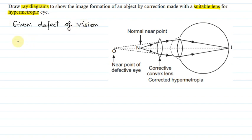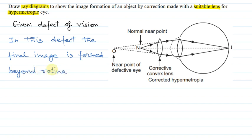Let's understand how to correct it and what is the procedure. In this defect, the final image is formed beyond retina. So on this basis, we can understand the correction. In the corrected case, the final image will be formed on the retina.